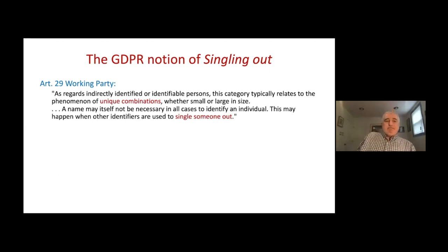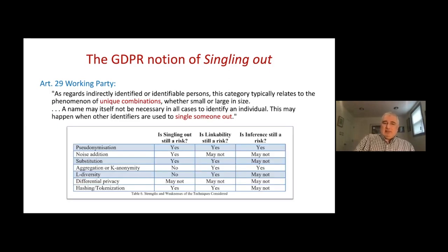The Article 29 Working Party says: 'As regards indirectly identified or identifiable persons, this category typically relates to the phenomenon of unique combinations whether small or large in size.' They continue: 'A name may itself not be necessary in all cases to identify an individual — this may happen when other identifiers are used to single someone out.' So singling out can happen by name or by other identifiers, including unique combinations. Furthermore, in another document the Article 29 Working Party examines several privacy technologies — including k-anonymity and differential privacy — against three risks, one of which is singling out.